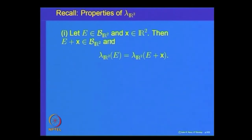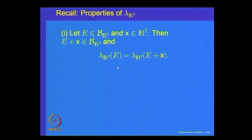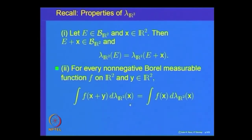Let us recall what we had shown in the previous lecture: if E is a Borel measurable subset of R², then its translate E + x is also a Borel measurable subset in R², and the Lebesgue measure of the translated set is the same as the Lebesgue measure of the original set—very much similar to the properties on the real line. We also showed that for a non-negative Borel measurable function on R², the integral of the translated function f(x + y) dλ(x) equals the integral of f(x). This is also equal to the integral of f(−x). So under reflections and translations, the integrals do not change.